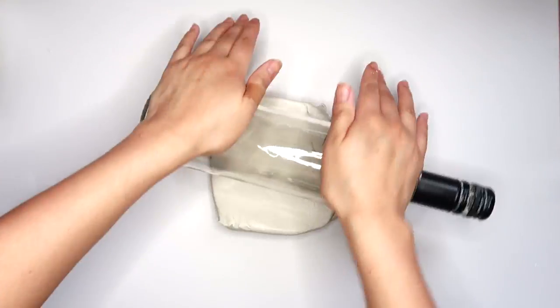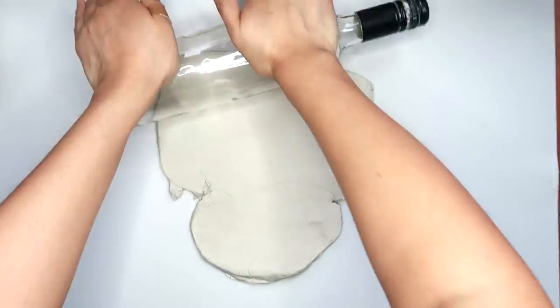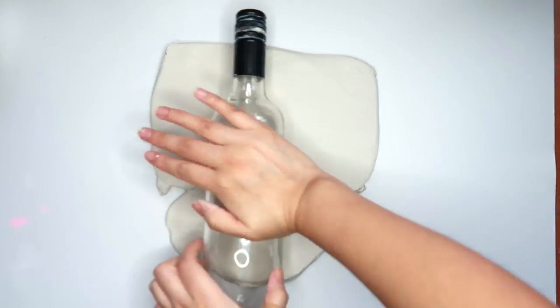So the first thing we're going to do is roll out our clay nice and thin, but like not too thin. So if when you pull your clay up, it rips, that's too thin.